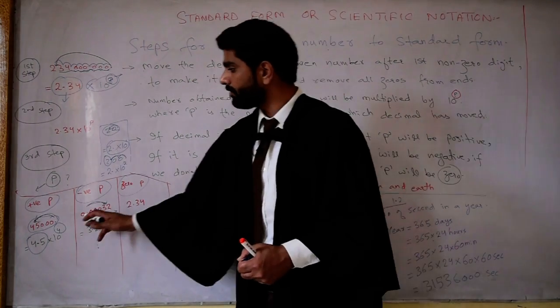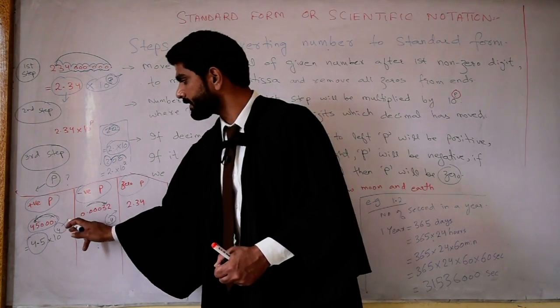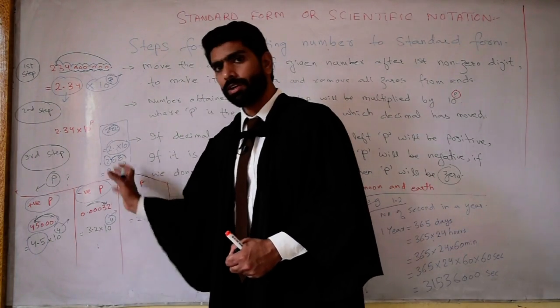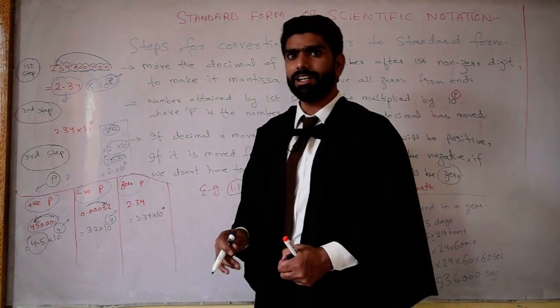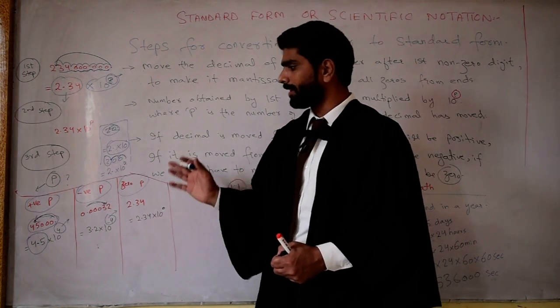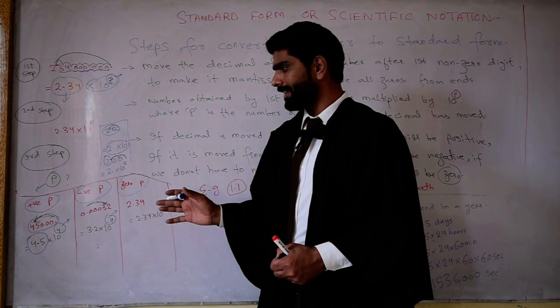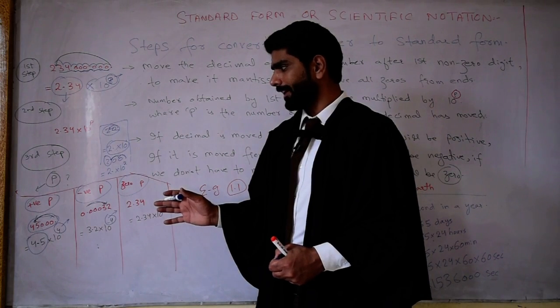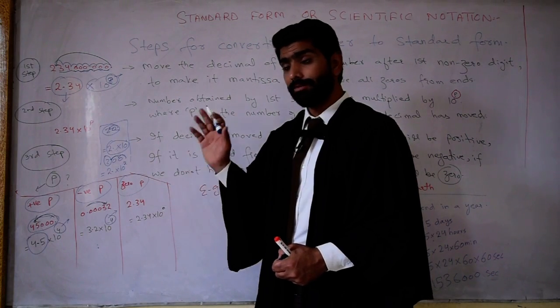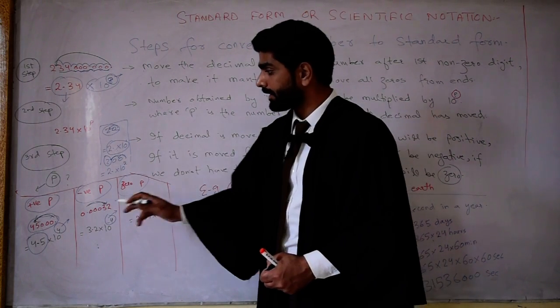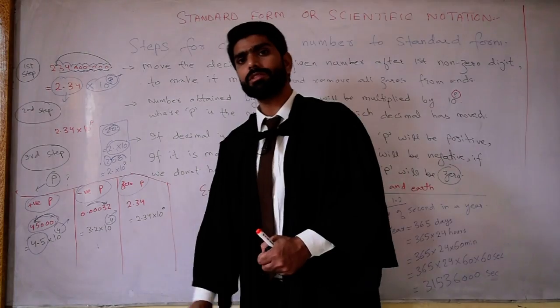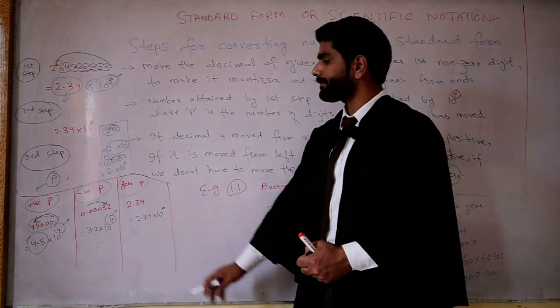When you are writing a large number (greater than 1) in scientific form, you use the power of 10 as positive. The number is large, so the power of 10 must be positive to preserve its value.